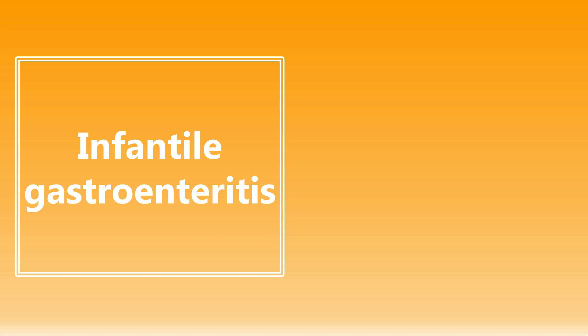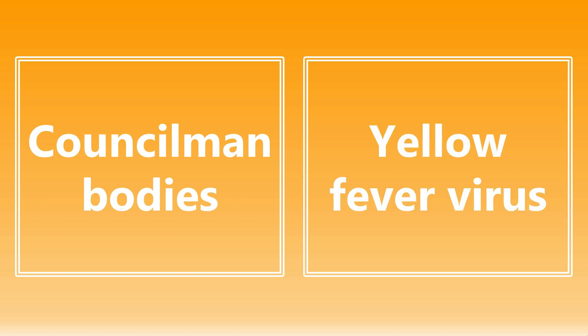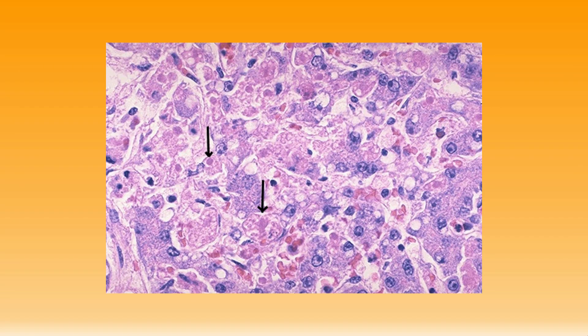Moving on: infantile gastritis. The most likely agent is going to be rotavirus. If an infant comes in with nausea, vomiting, and diarrhea, and they ask you what the most likely causative organism is, it is going to be rotavirus. Next: Councilman bodies. If you see this on the exam, you should be thinking of yellow fever virus. Remember, these Councilman bodies are eosinophilic globules — very pink, distinct color — and they're a sign of hepatocyte apoptosis, which can also be seen in hepatitis.